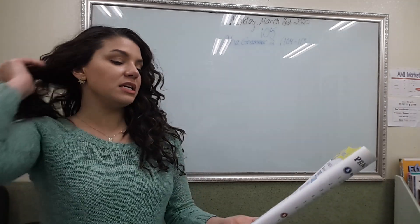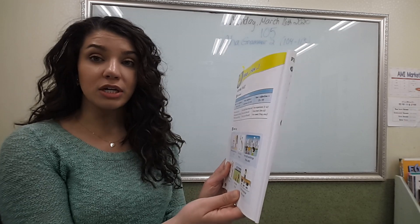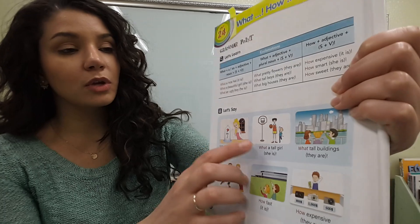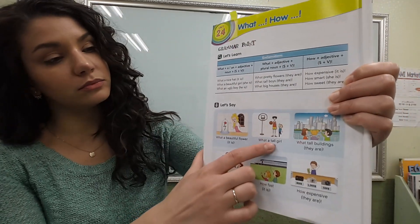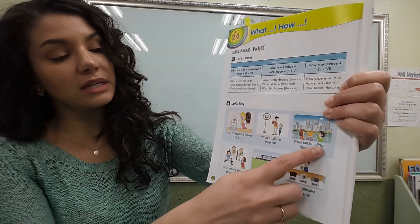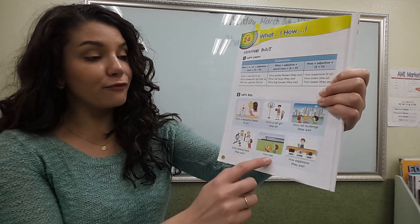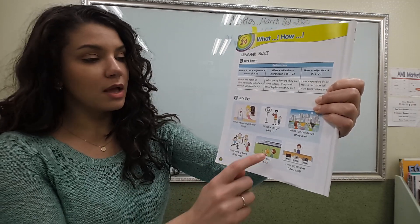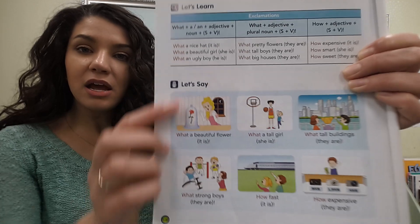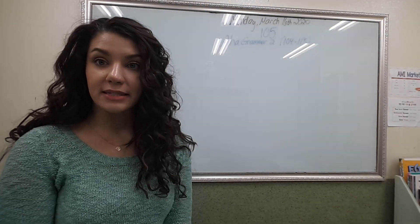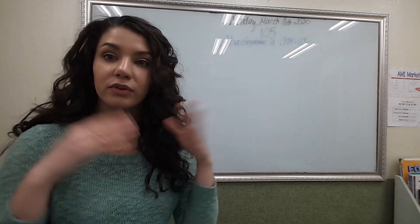Let's practice exclamations: what a beautiful flower! What a tall girl! What tall buildings! What strong boys! How fast! How expensive! Practice saying these exclamations by yourself — it's fun if you say them with surprise: 'how fast!' 'how expensive!' Practice saying them excitedly.